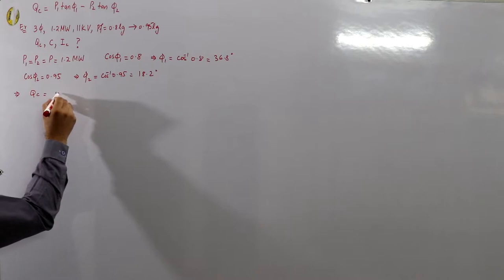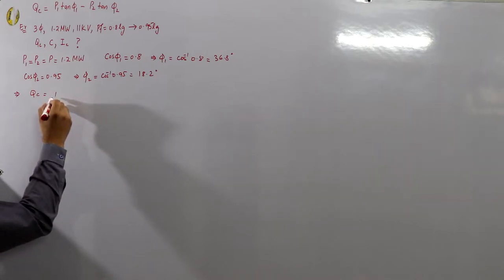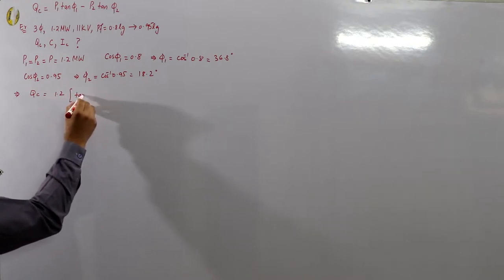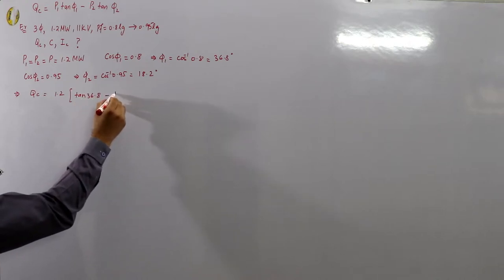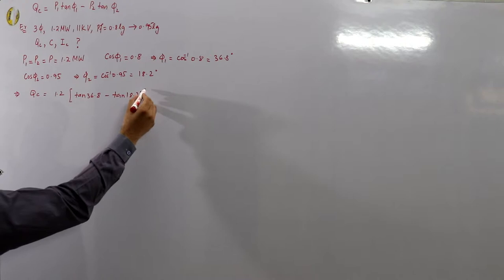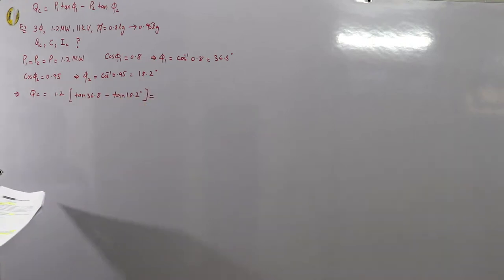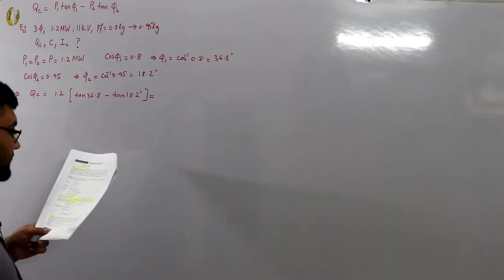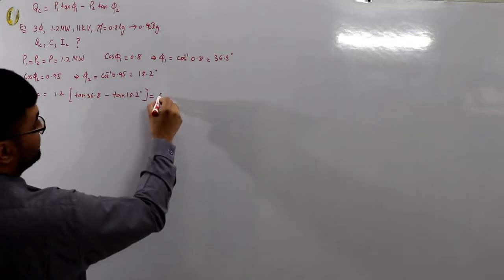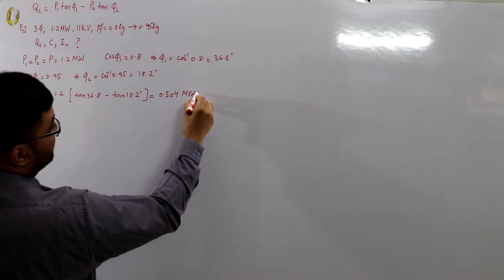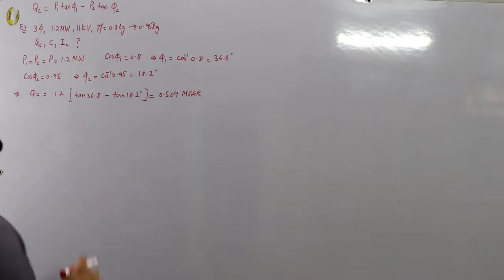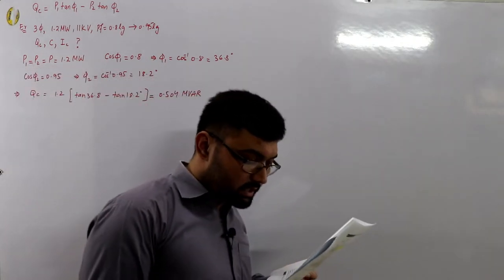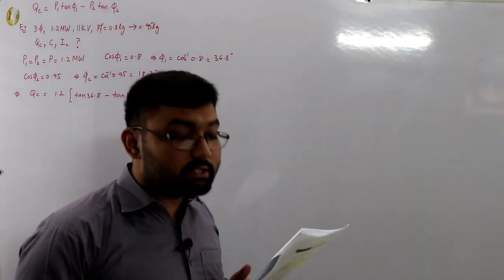The leading kVARs injected by the capacitor QC equals 1.2 times (tan 36.8° minus tan 18.2°), which comes out to 0.504 megavars — or equivalently 504 kVARs. This is for the three-phase system.